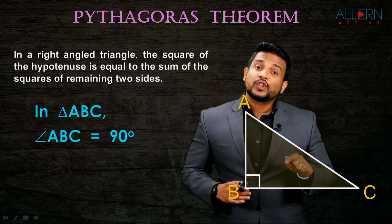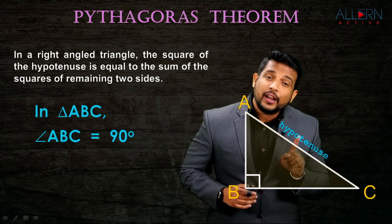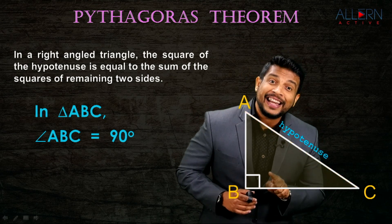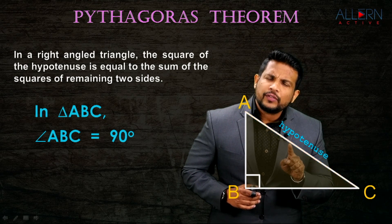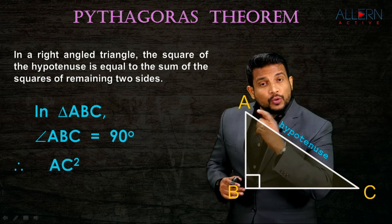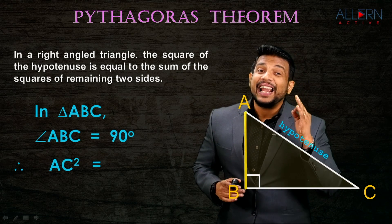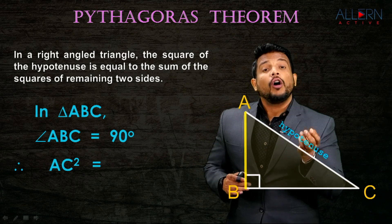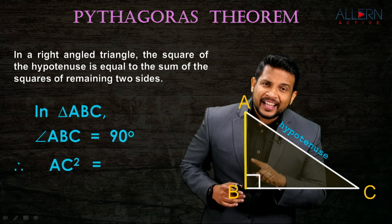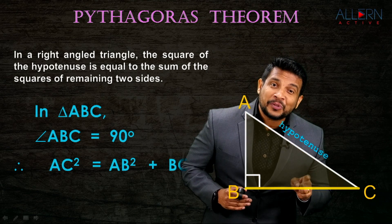The hypotenuse is the side opposite the 90 degree angle - opposite to the right angle. So the square of the hypotenuse means AC square, is equal to the sum - sum means addition, that is plus - of the squares of the remaining two sides, which are AB and BC. So we write: AC² = AB² + BC².